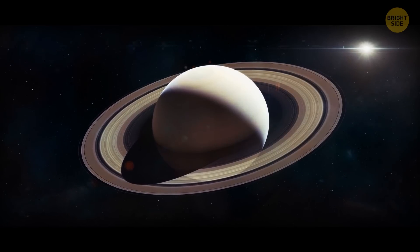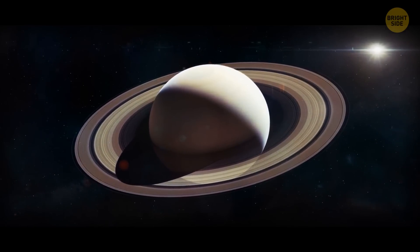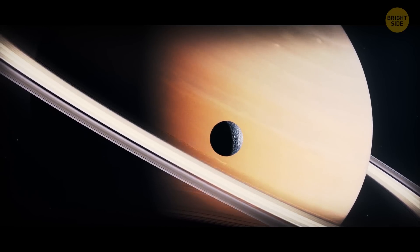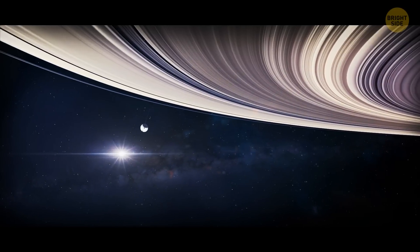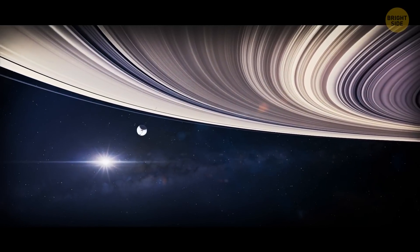Saturn's rings are very thin compared to its size. If you had a scale model of the planet that was 3 feet wide, the rings would be 10,000 times thinner than a razor blade.